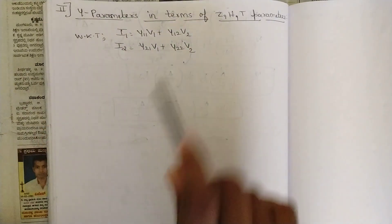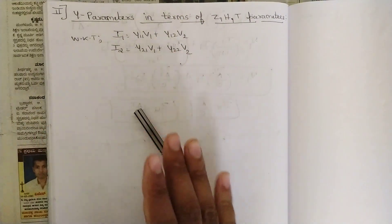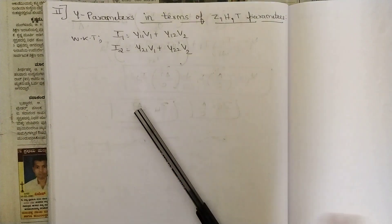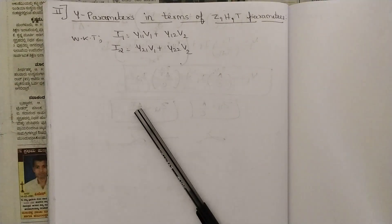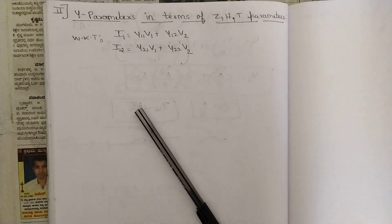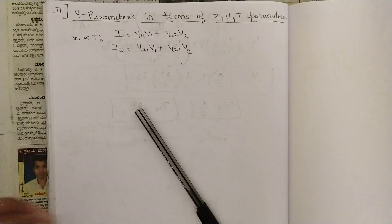So we have Y parameters in terms of all other three — that becomes three more. Then for the remaining two parameters, three each as well. So three plus three plus three plus three is twelve — totally twelve kinds of questions I am solving across these videos. Any one or two might come in the exam, so be thorough with that. We are going to discuss Y parameters now.